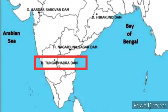The last dam is Tungabhadra Dam. It is also known as Pampa Sagar, constructed across the Tungabhadra river, a tributary of the Krishna river. It is in Vijayanagara district of Karnataka. Thank you.